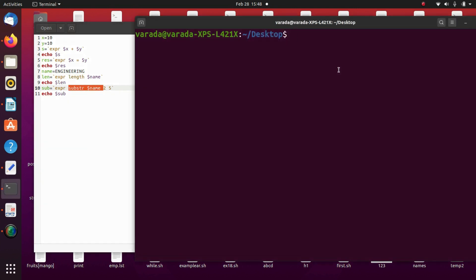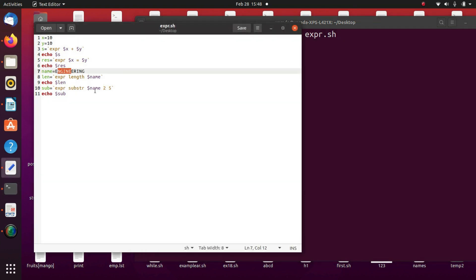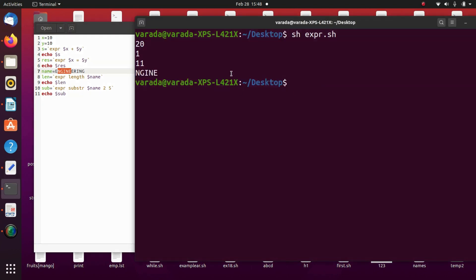We execute this: sh expr.sh. So 10 plus 10 equals 20, and 10 equals to 10, it is true, so it returns 1. And length of engineering is 11, and 2 to 5 means from second position: 2, 3, 4, 5. So this is the output.